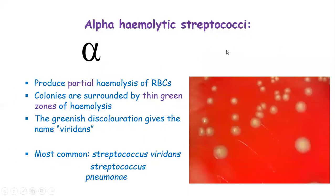Alpha hemolytic Streptococcus produces partial hemolysis — there is some breakdown of RBCs, but not complete. The RBC byproducts from incomplete breakdown create a green coloration, so the zones around the colonies of alpha hemolytic bacteria are not clear but show a greenish discoloration — giving them the name 'viridans.' Examples of alpha hemolytics include Streptococcus viridans and Streptococcus pneumoniae.